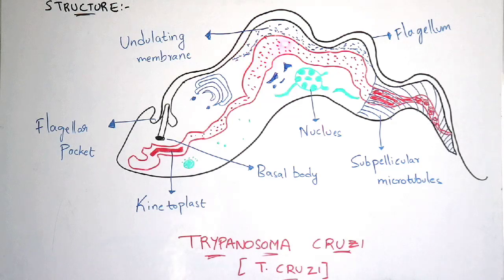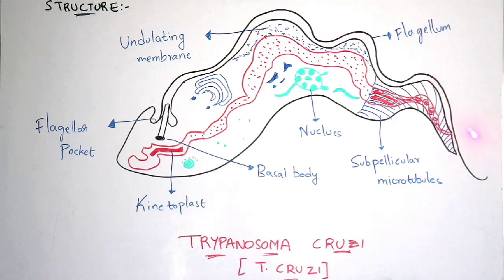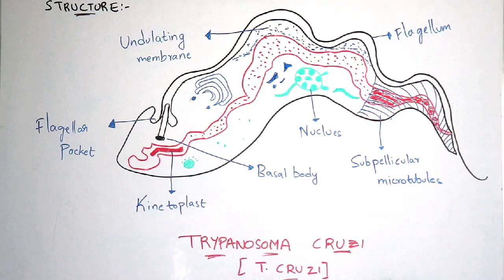The blue dotted structures drawn below the flagellum represent the undulating membrane. With the help of that undulating membrane, the flagellum is attached to the body of Trypanosoma cruzi. Here is the nucleus, and this is the sub-pellicular microtubules.